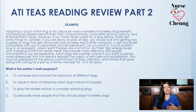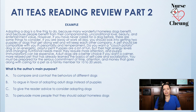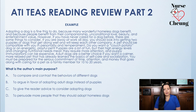Here's an example passage: 'Adopting a dog is a fine thing to do because many wonderful homeless dogs benefit and people could also benefit from their companionship, unconditional love, and entertainment value. However, if you have never cared for a dog before, there are some things you might want to consider. If you're away at work all day, you should look into getting two puppies or dogs that get along well and will keep each other company. A pet should be compatible with you in personality and temperament — do you want a couch potato dog or do you want an energetic, playful pet? Puppies are a lot of fun, but their high energy levels and changing nutritional needs mean they require more attention, and puppy immunizations can be expensive. Adult dogs are a better choice if you want a calmer, more relaxed pet that has already learned the basics of self-care and socialization. You must be prepared for the serious commitment of time, attention, and money that goes along with caring for a pet as a family member for at least 10 to potentially even 20 years.'